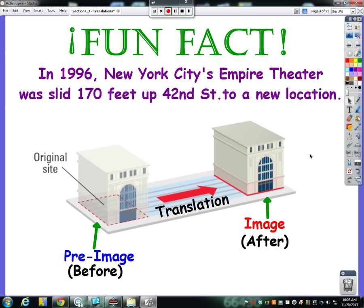Hey guys, I got a fun fact for you. This is true, I'm not making this up, not at all. So in 1996, New York City's Empire Theater was slid 170 feet up 42nd Street to a new location. Isn't that awesome? They took the whole building, they put it on rollers, and they slid it up the street. True story. Fun fact, I know you guys were just so excited to have that fun fact there.